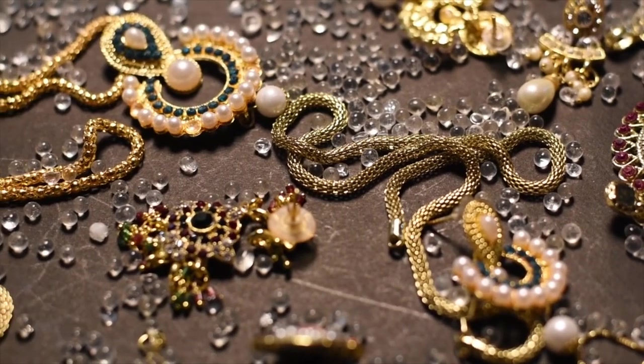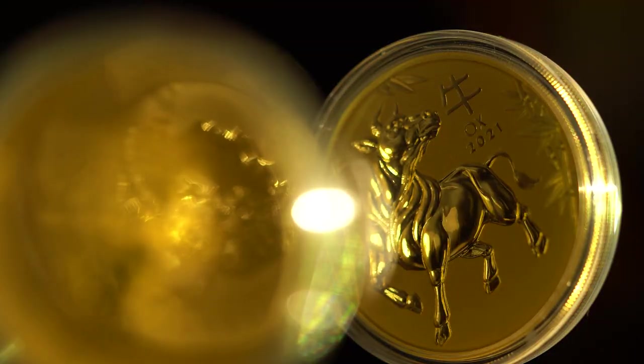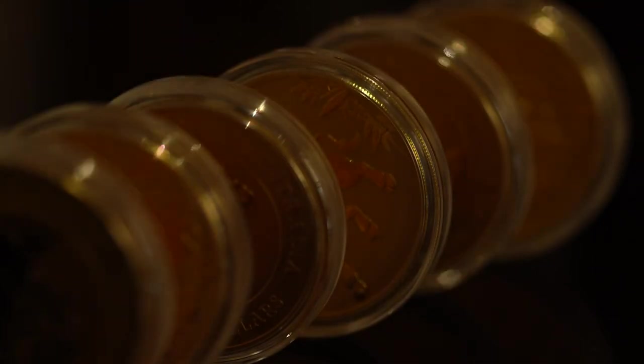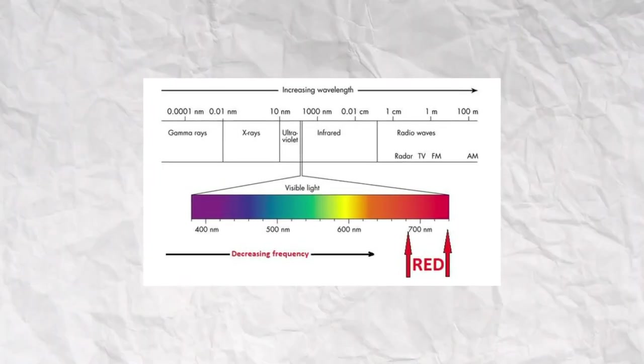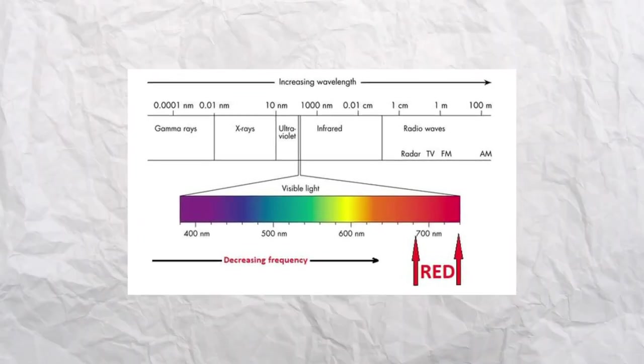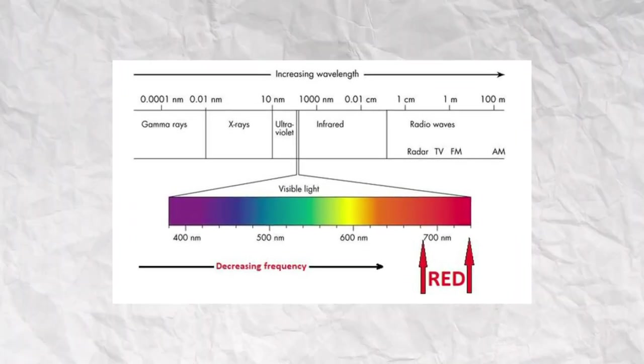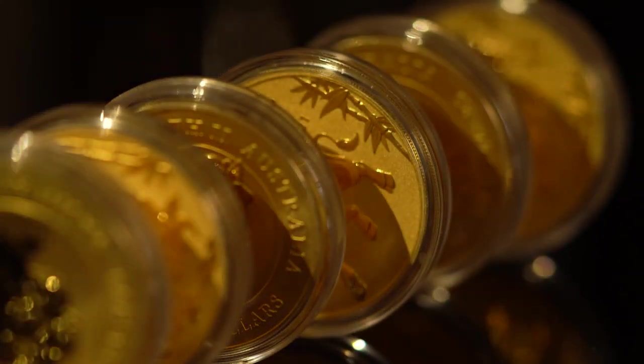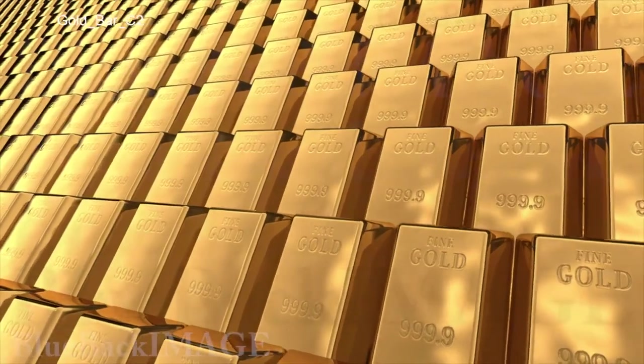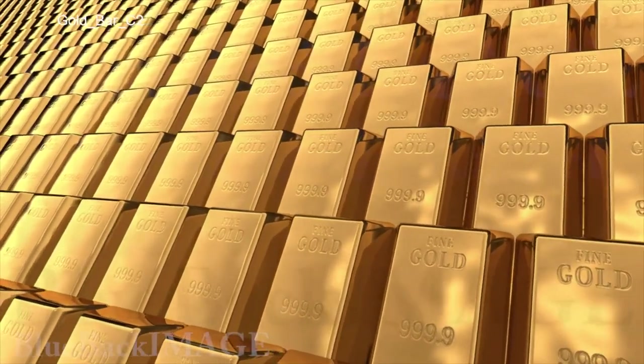Gold is a good conductor of heat and electricity. Whereas most metals are gray or silvery white, gold is slightly reddish-yellow. This color is determined by the frequency of plasma oscillations among the metal's valence electrons in the ultraviolet range for most metals, but in the visible range for gold due to relativistic effects affecting the orbitals around gold atoms. Similar effects impart a golden hue to metallic cesium.